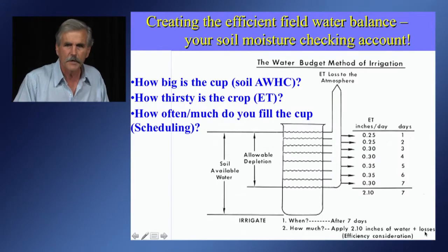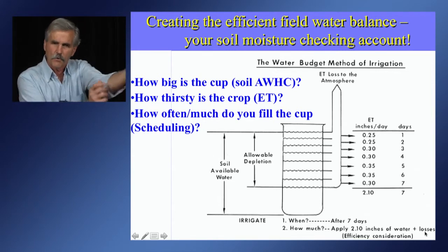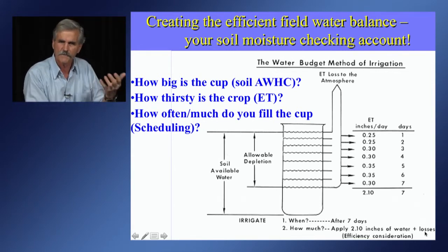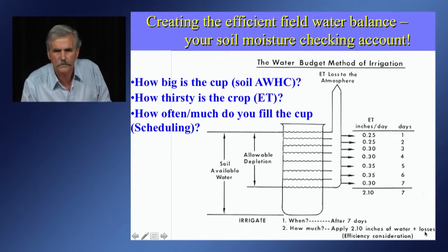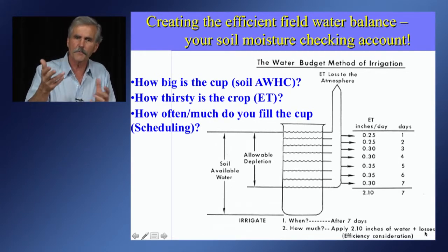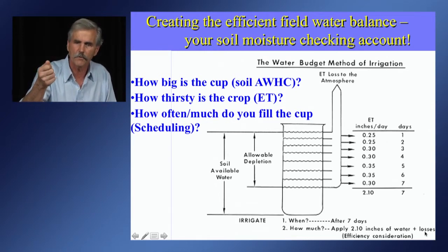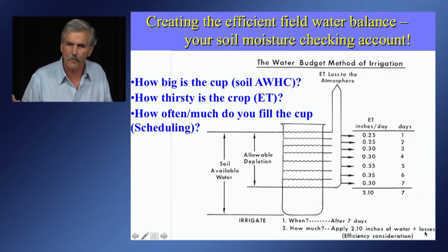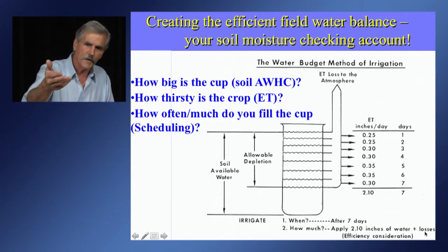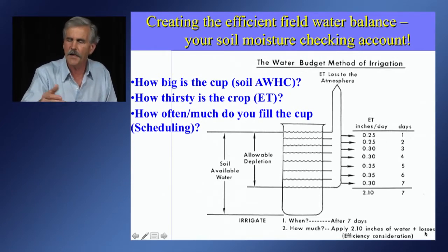The reason you need to understand that is: say I've got mature almonds with a good profile down to six feet. Just how big is my cup? With a clay loam soil with a two-inch water holding capacity, I've got 12 inches of available water in six feet. Or if you have a moderately fine-grained sandy loam, you may have seven inches in this particular example.